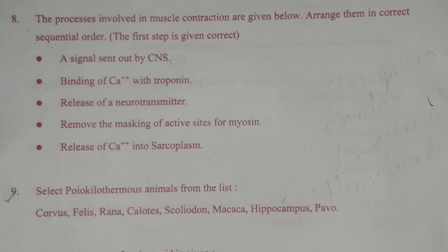Question 16: Select poikilothermus animals from the list: Corvus, Phelous, Rana, Calotes, Scoliodon, Macaca, Hippocampus, Pavo. Answer: Rana, Calotes, Scoliodon, Hippocampus.